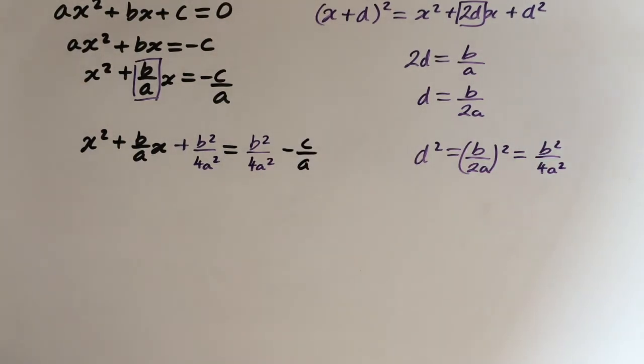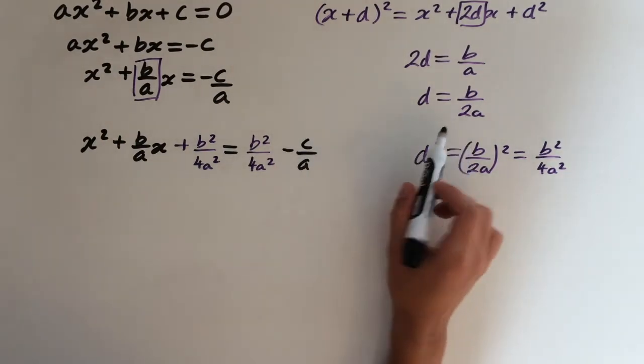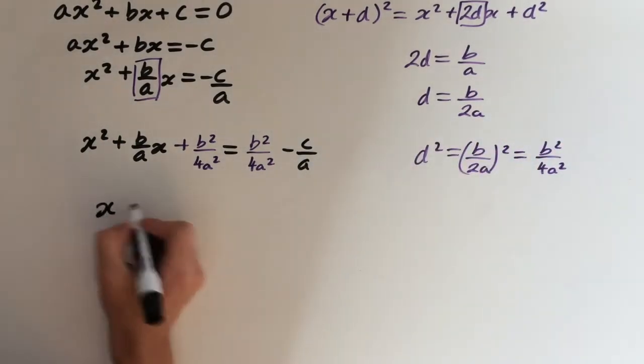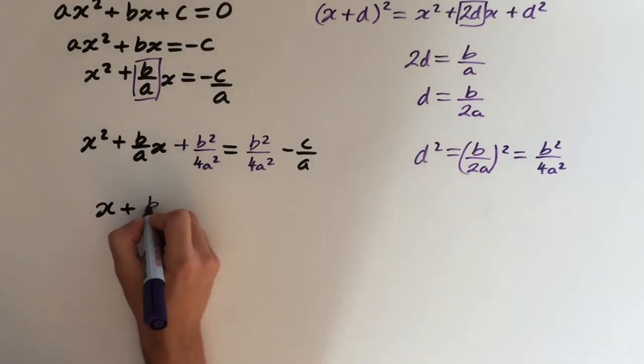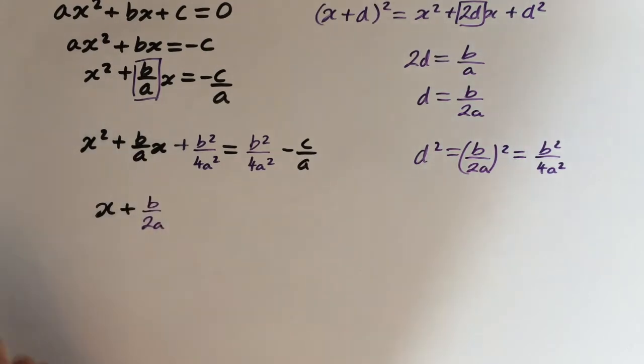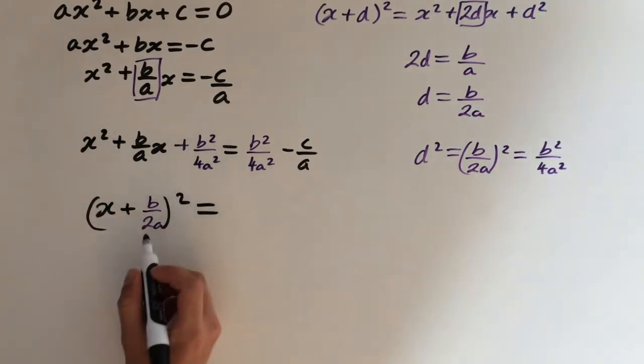So now we can complete the square. From earlier we found the value of d was b over 2a, so we can just write this as x plus b over 2a all squared. So the left hand side is now in the complete square form.